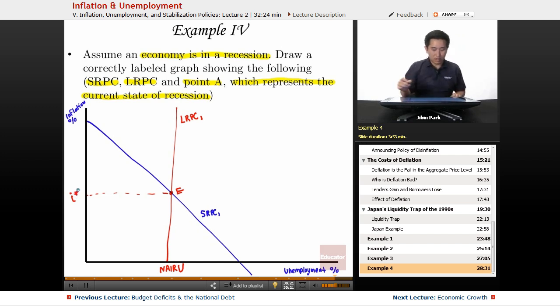Let's label this as E here, and let's say this is I-star where it's in equilibrium, and NIRU let's label as U1. So what is the point of recession?